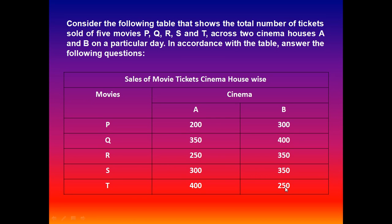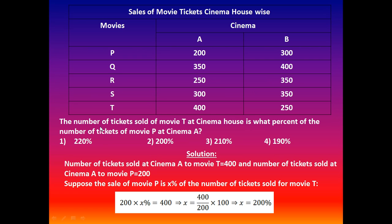Movie T contains 400 and 250 at cinema A and B respectively. Question 1: The number of tickets sold of movie T at cinema A is what percent of the number of tickets of movie P at cinema A? Options: 220%, 200%, 210%, 190%. The number of tickets sold at cinema A for movie T is 400, and for movie P is 200.